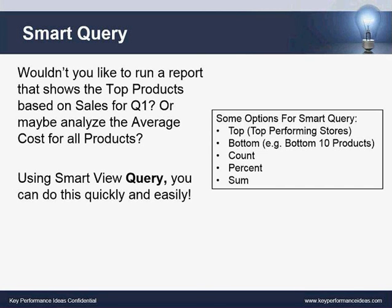In addition to Smart Slice is the Smart Query. Wouldn't you love to run a report that shows the top products based on sales for quarter one, or analyze the average cost for all your products? Using Smart Query, you can do this quickly and easily. Just like Smart Slice, Smart Queries can be saved in the Smart View panel and used by users. Options include top — for example, top performing stores — bottom ten products, counts, percents, sums, and lots of other functionality.